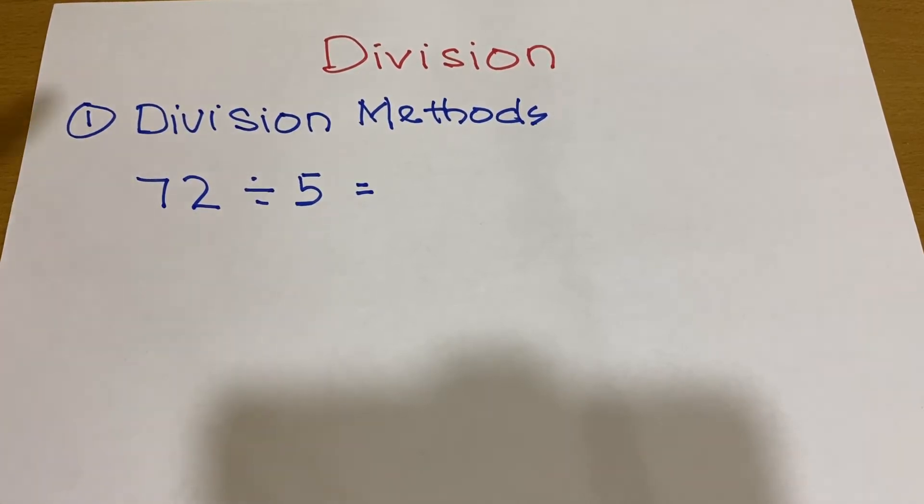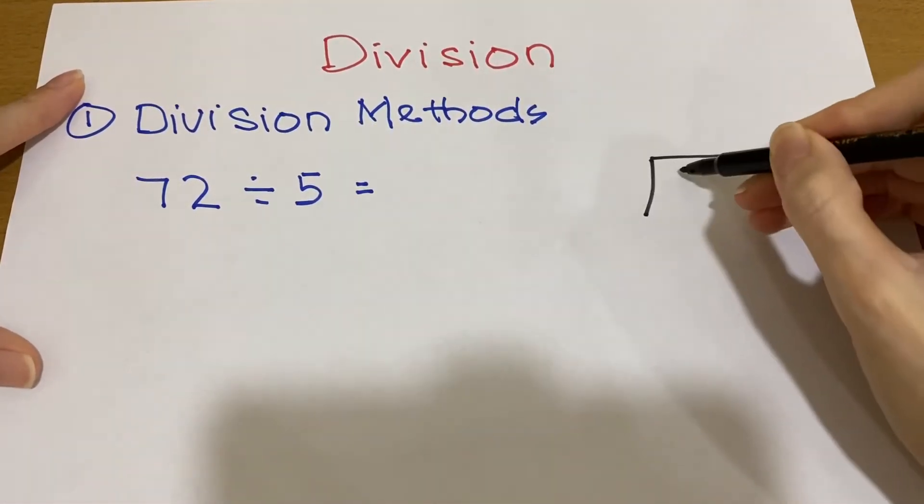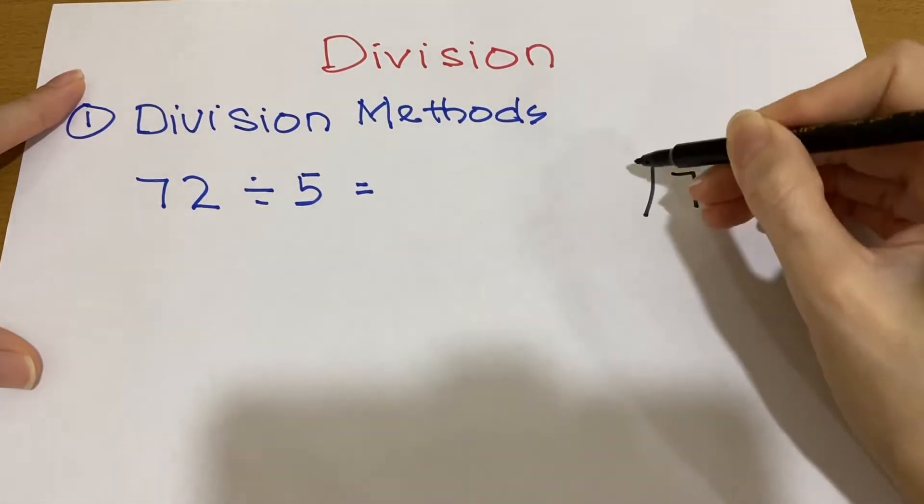The first one, we are using division methods. The question is 72 divided by 5. So as usual, we will do the working. We put 72 inside and 5 outside.